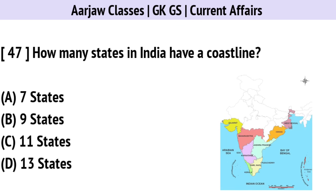How many states in India have a coastline? Correct option is B — Nine.